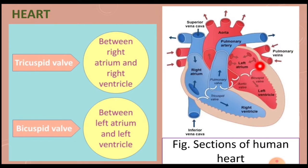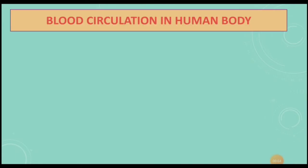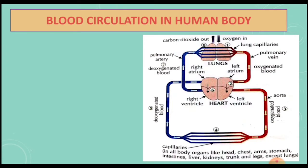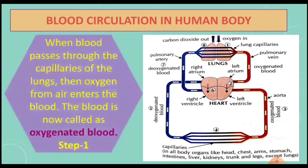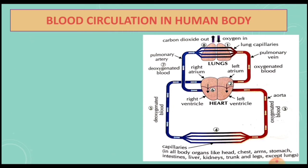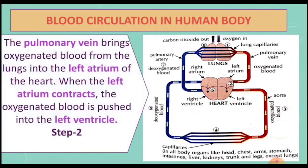Now let's see blood circulation in the human body. Blood is circulated by the regular contractions and relaxations of the heart. Let us understand the circulation of blood with the help of this schematic diagram. Step one: when blood passes through the capillaries of the lungs, oxygen from air enters the blood, and the blood is now called oxygenated blood.